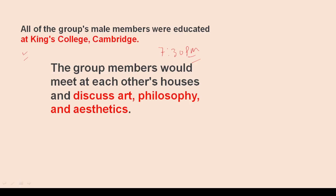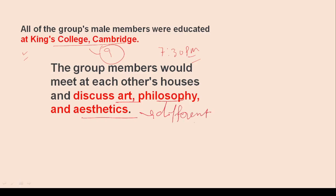All the male members of the group were educated at King's College, Cambridge — so that can be a question: where were they educated? The group members would meet at each other's houses and discuss art, philosophy, and aesthetics.